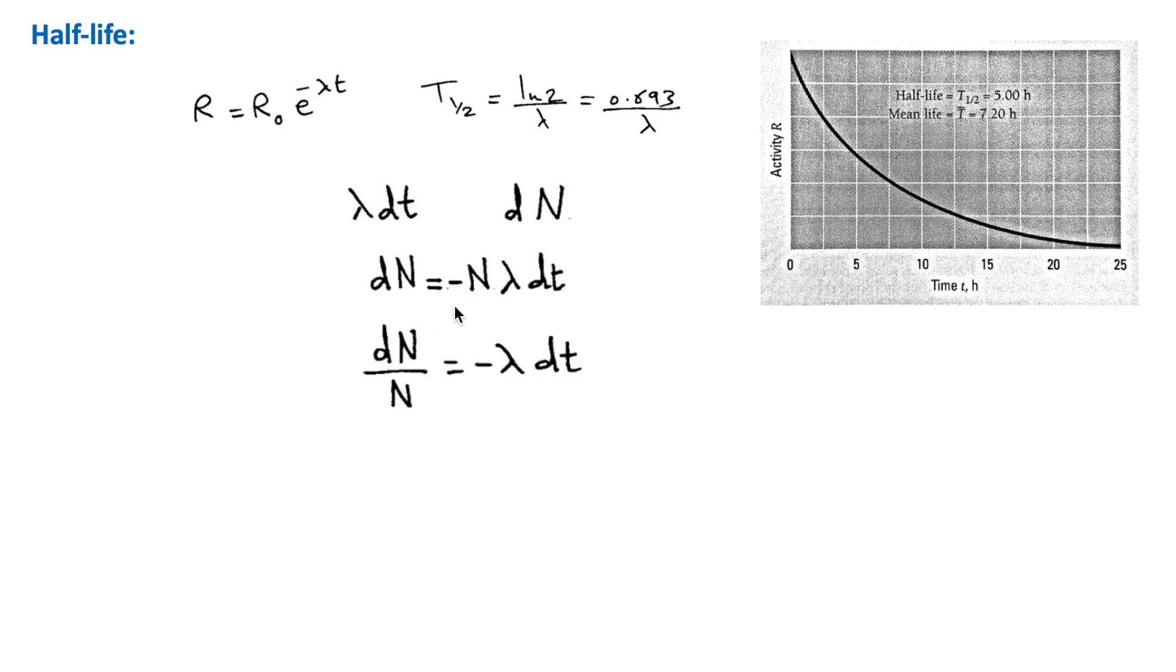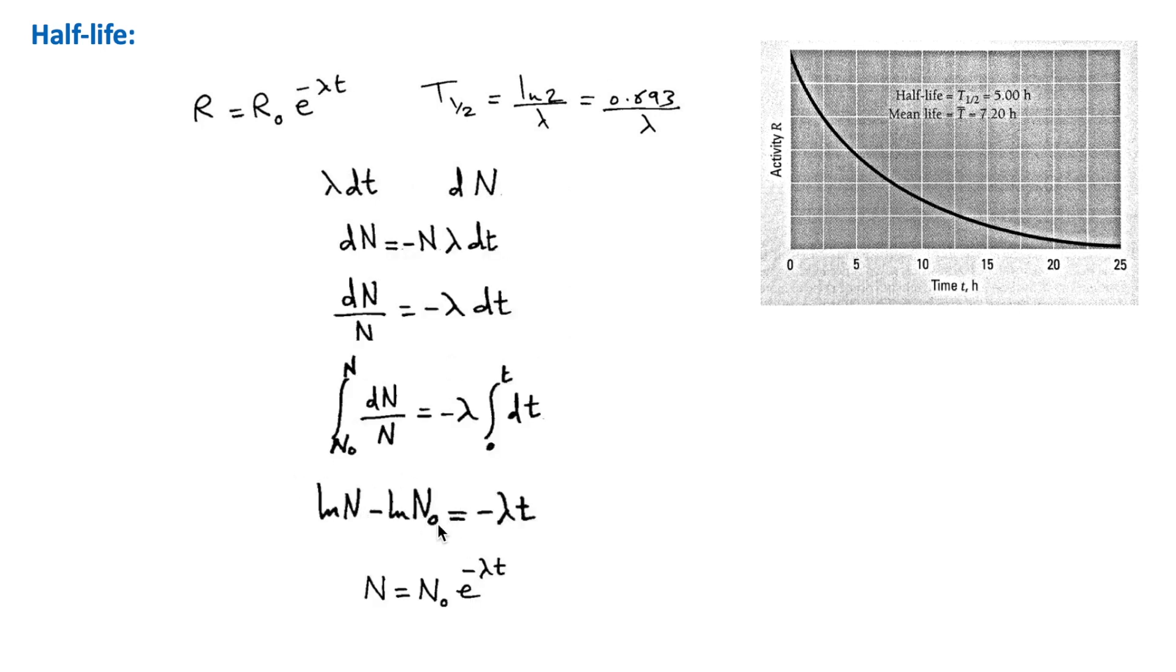From this, we get this equation, and then we can integrate each side. This gives the number n of undecayed nuclei at time t, in terms of the decay probability per unit time lambda and the number n naught of undecayed nuclei at time t equals 0.